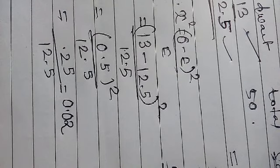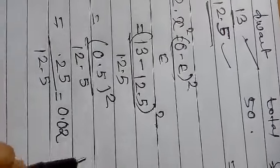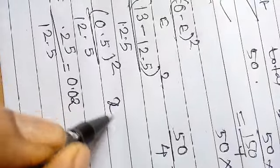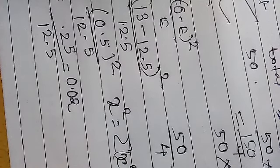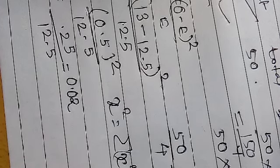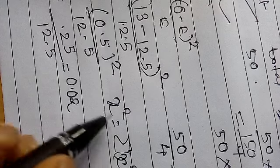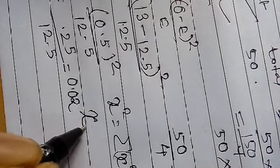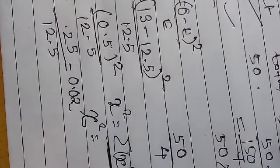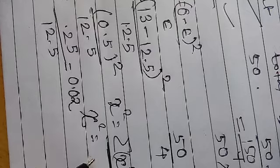Now we add both chi-square values. The total chi-square is the summation of the chi-square of the first observation plus the chi-square of the second observation, and so on. With only two observations here, we add 0.006 and 0.002.